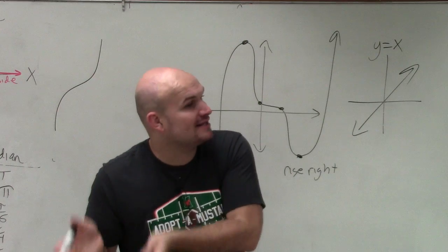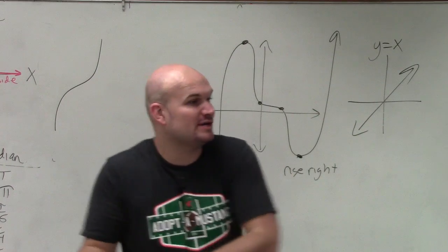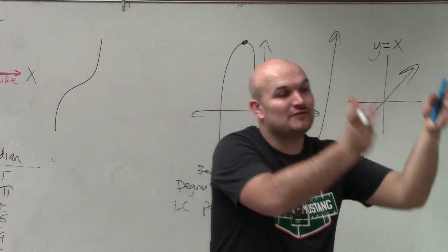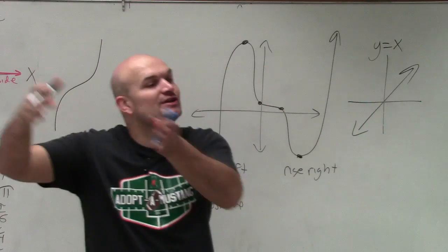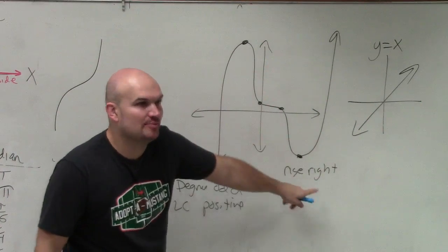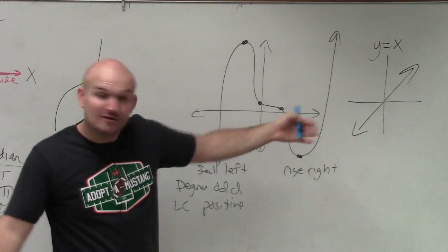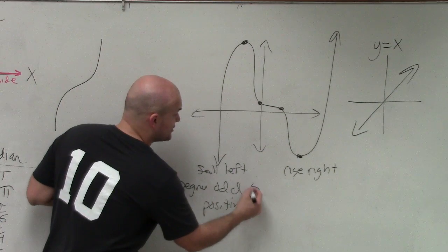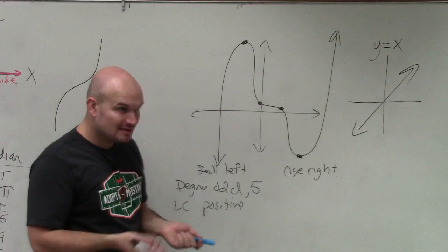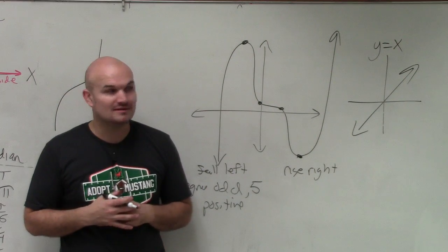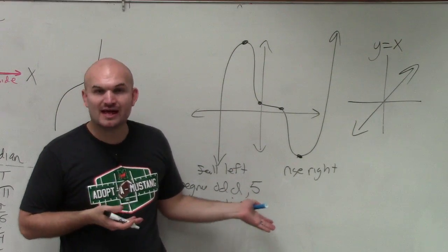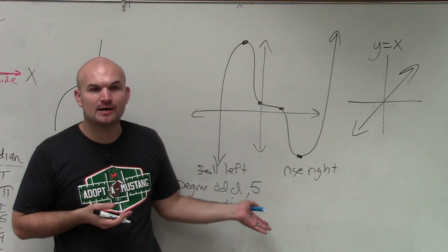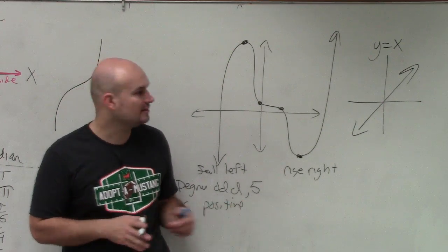You subtract one from the degree to get the number of turning points. If you're given the number of turning points to find the degree, you would add one. So if there's four turning points, what is the degree? Five. And does that make sense for my degree to be odd? Yes, it does. So that's how you can find the degree. Does that make sense?